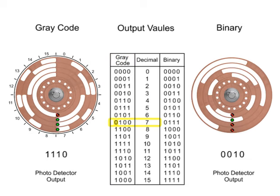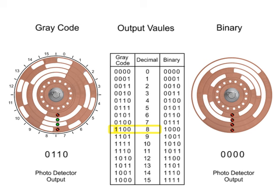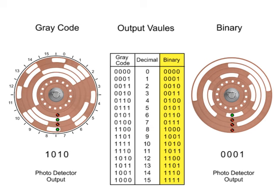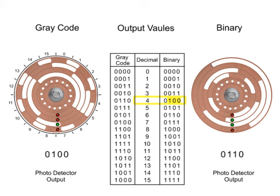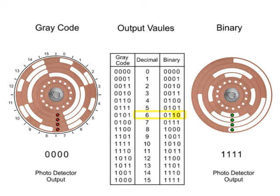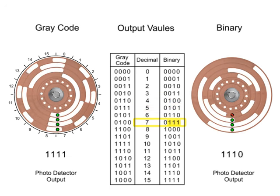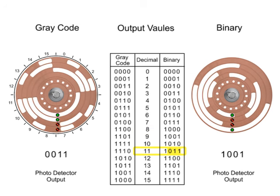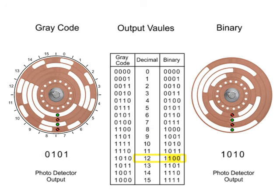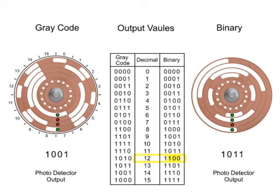Gray code is designed where only one bit changes at a time, contrary to a binary system where one or more numbers change in the word. By changing more than one number of the word at a time in the binary system, the possibility of positioning errors is greater, leaving gray code the preference in precision applications.